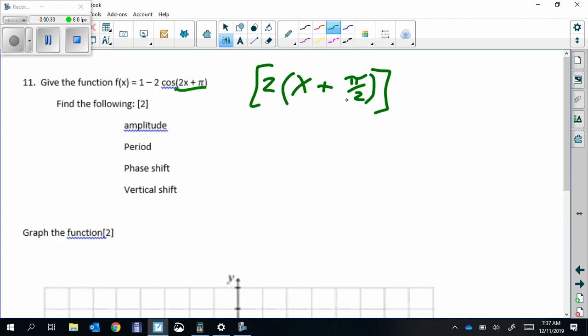Now that's going to help us with our phase shift, and this is b, which is our period changer. The 1 minus 2 cosine gives us our vertical shift and amplitude. The amplitude comes from the number in front of the trig function, so the amplitude is 2. The negative is just a reflection, not really part of the amplitude.